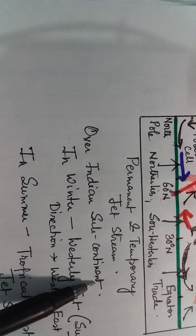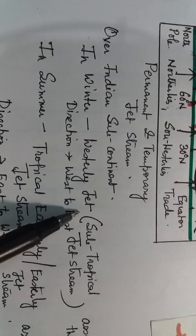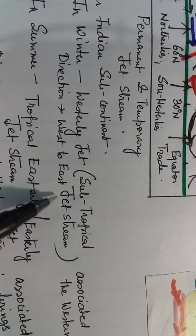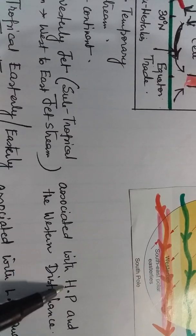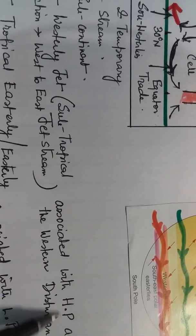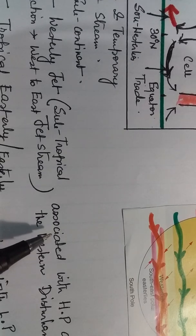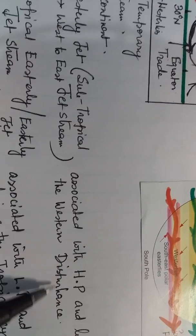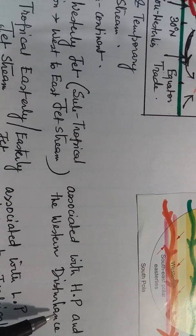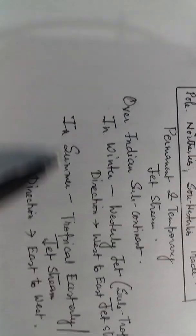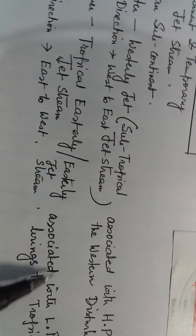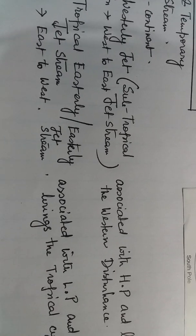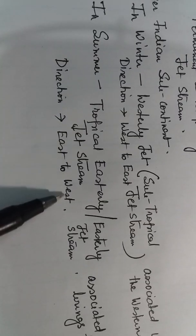Over the Indian subcontinent: in winter we have the westerly jet, also referred to as the subtropical jet stream. Whenever there is high pressure over the northwestern part of India, this jet stream blows into India and brings western disturbances — that is, temperate cyclones — blowing from west to east. In summer we have the tropical easterly jet stream, associated with low pressure, which brings tropical cyclones into India and blows from east to west.